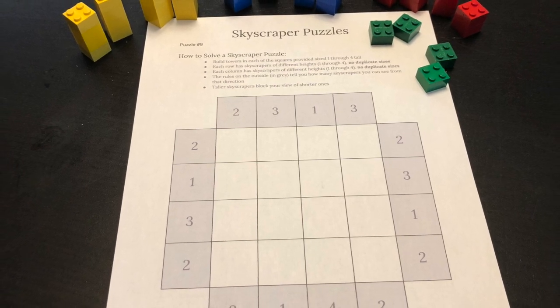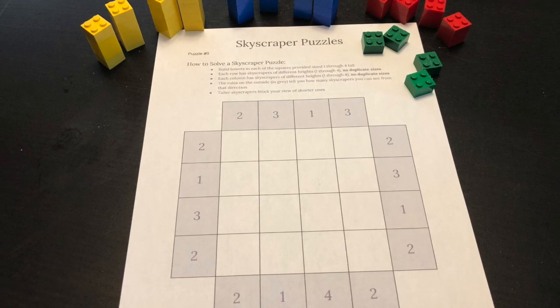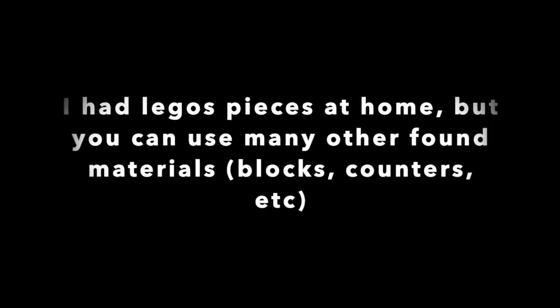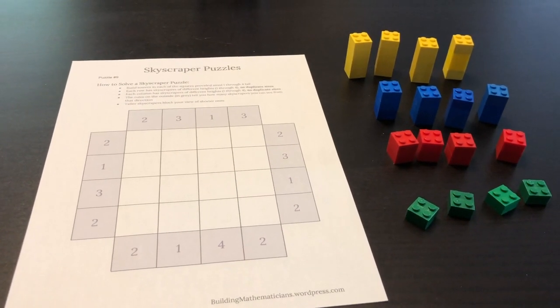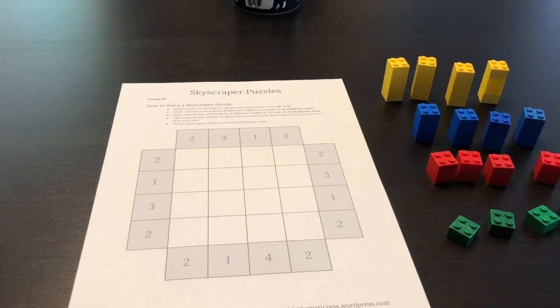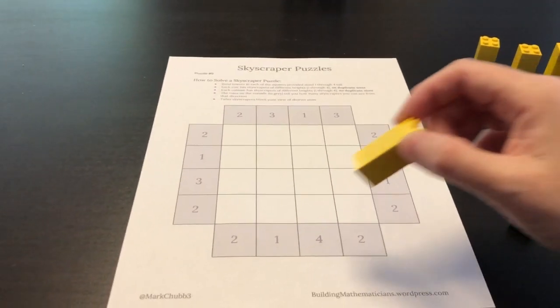Each row and each column are going to have skyscrapers of different heights one through four. There can be no duplicate sizes. The numbers on the outside and in the grey boxes tell you how many skyscrapers you see from that direction. The taller skyscrapers are going to block your view of the shorter ones.